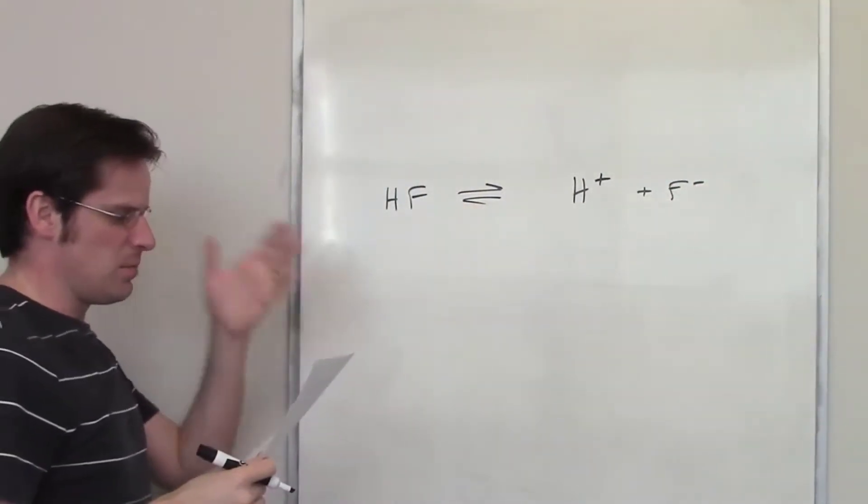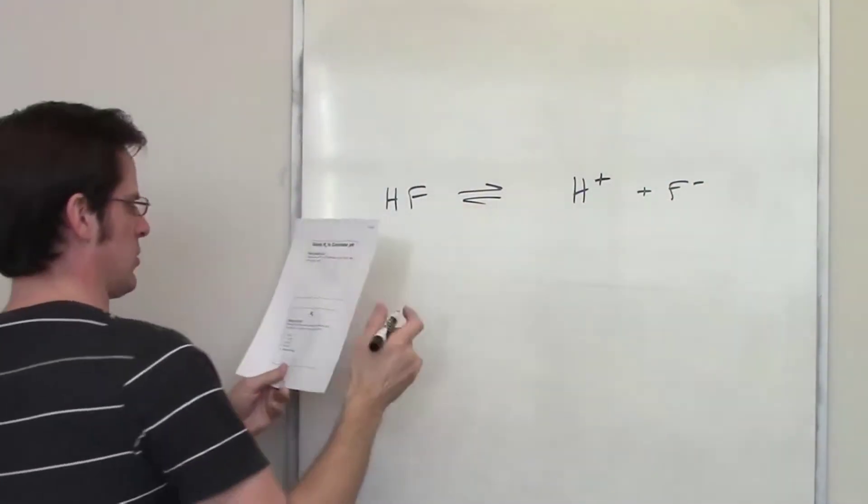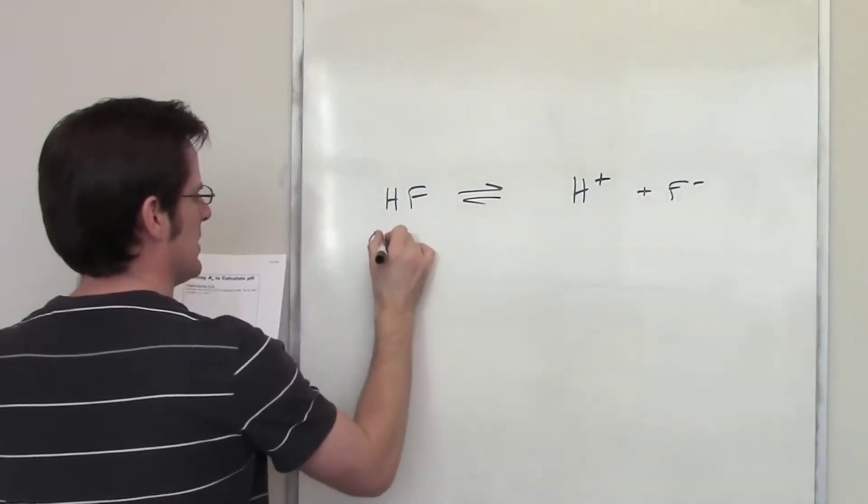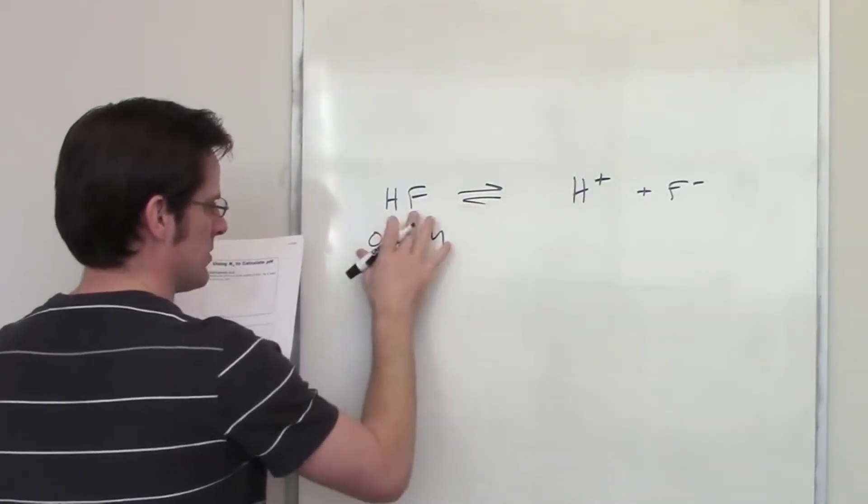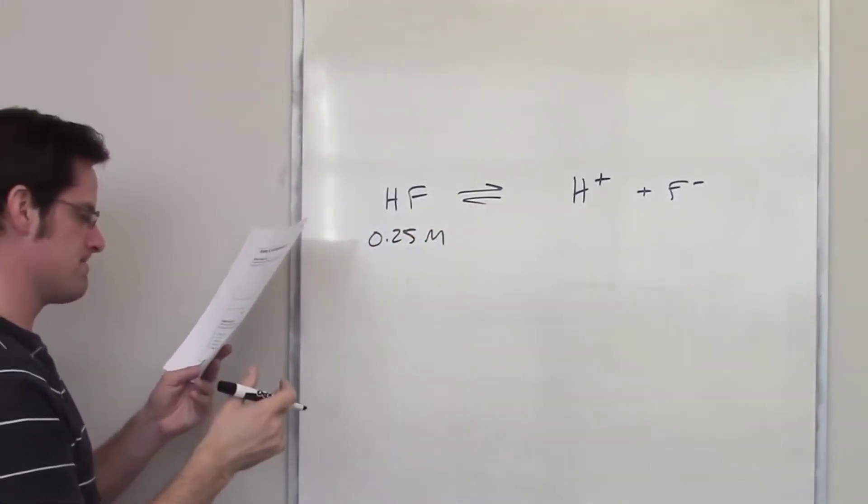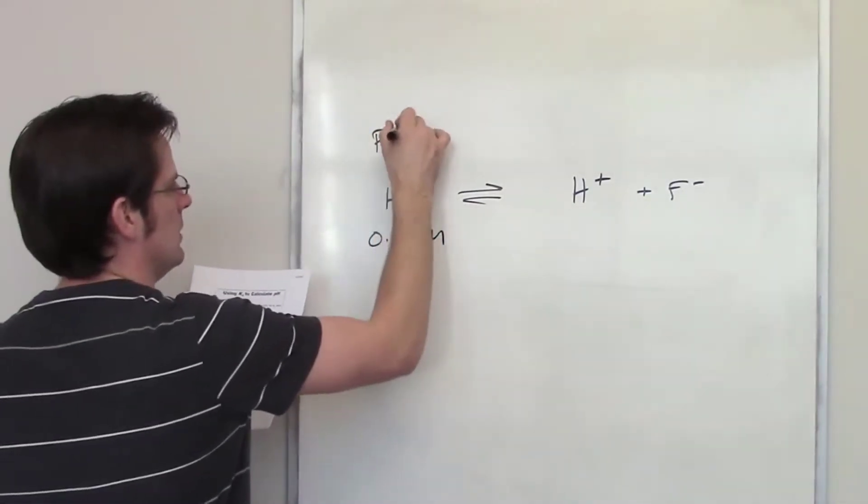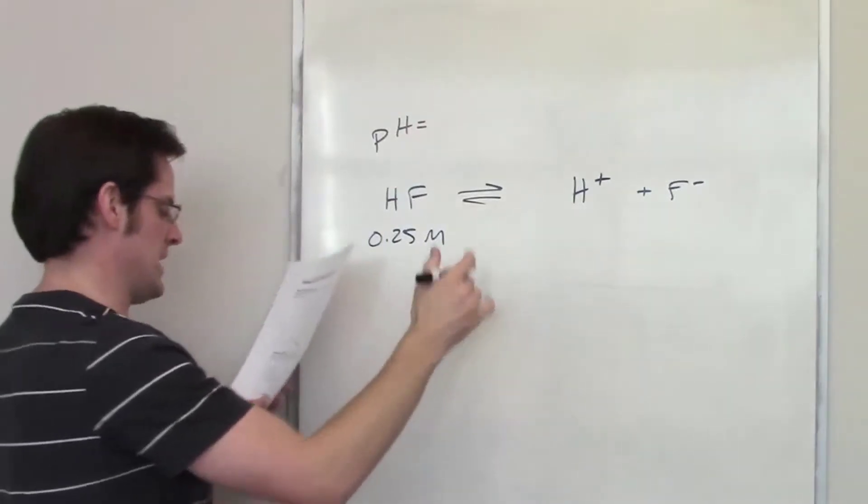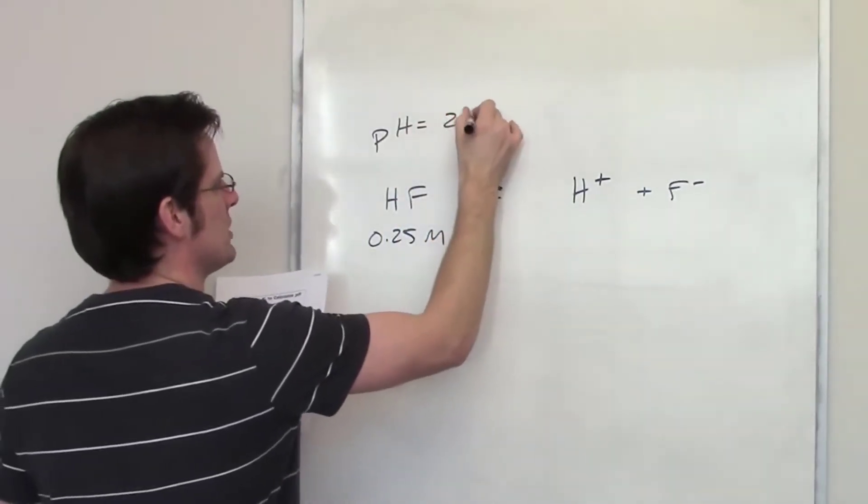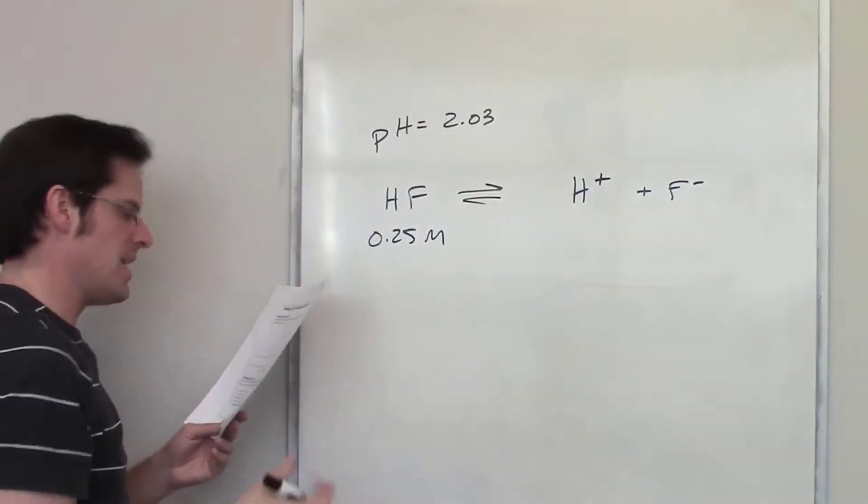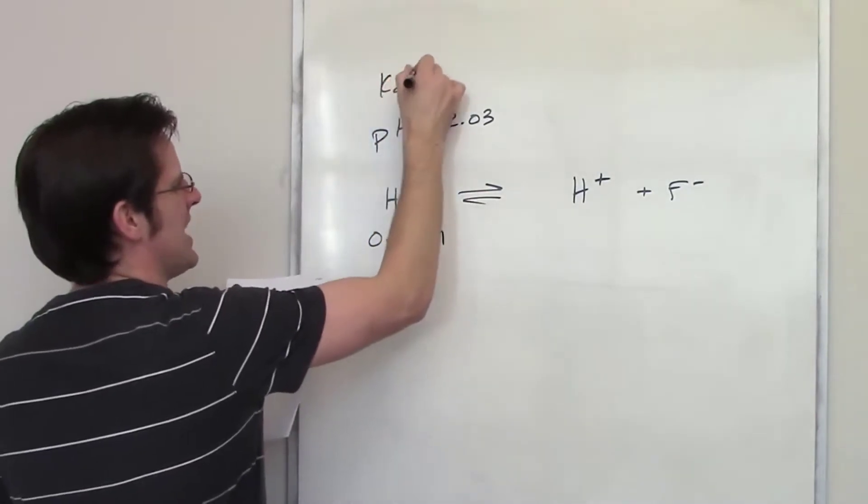It then tells me that the pH of this solution, once it reaches equilibrium, is equal to 2.03. It then asks me what Ka is. Ka equals what? How in the world do you do that?